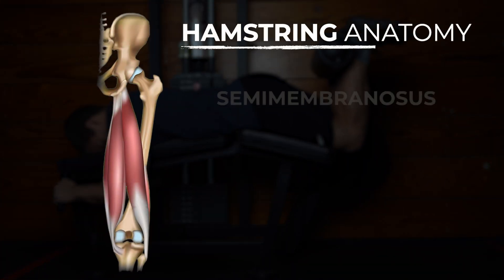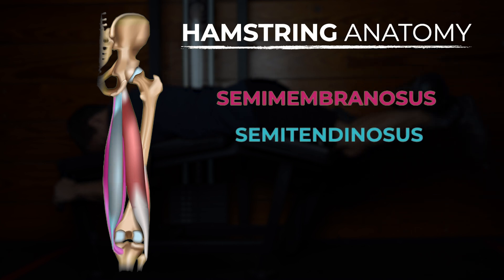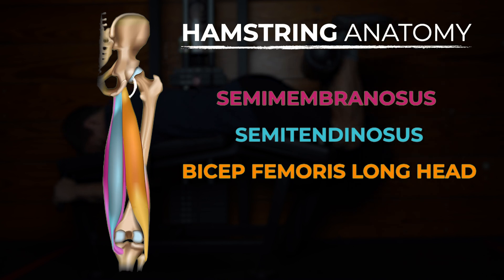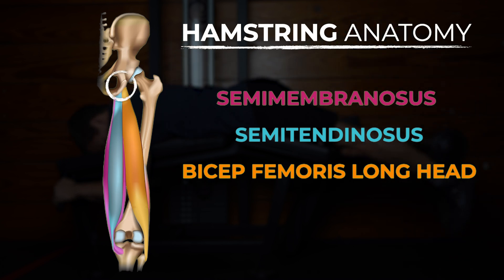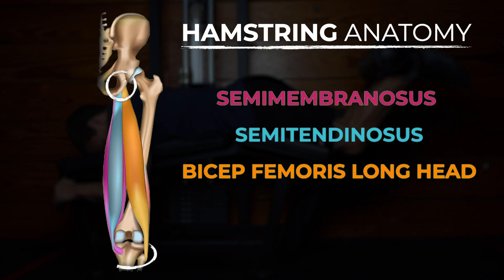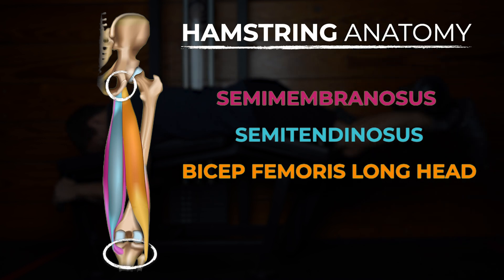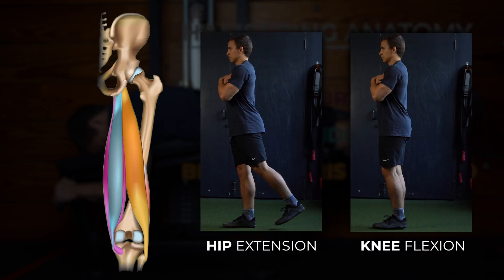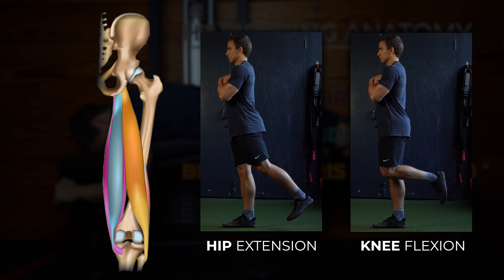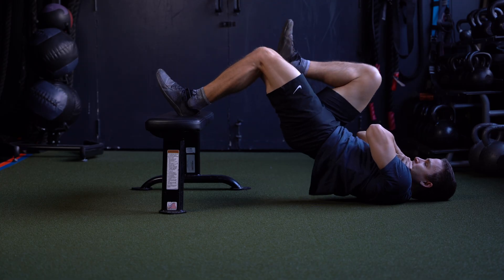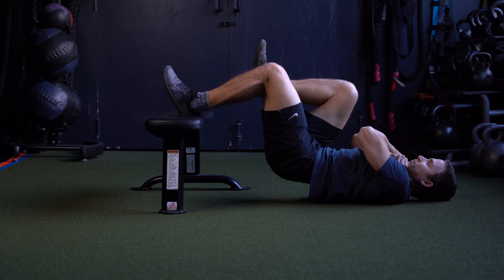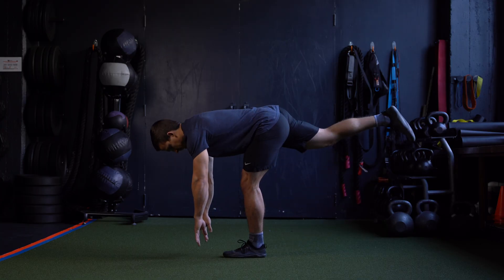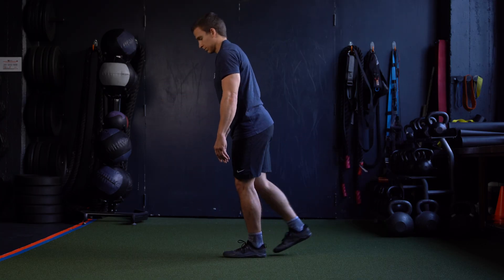The hamstrings consist of the semimembranosis, semitendinosis, and biceps femoris long head, which all originate on the ischial tuberosity of the pelvis — also referred to as your sit bone — and insert on the lower limb at the tibia and fibula. They primarily contribute to sagittal plane motion such as hip extension, knee flexion, and posterior tilting of the pelvis. The biceps femoris short head is not included because it is not relevant to this diagnosis, and some do not consider it a true hamstring since it has a different origin and innervation.